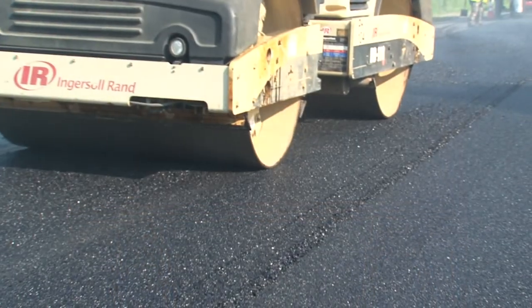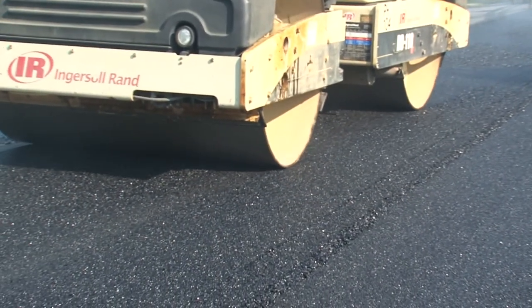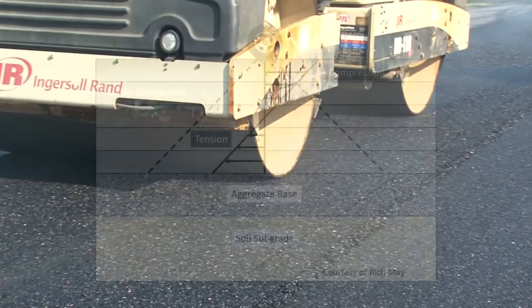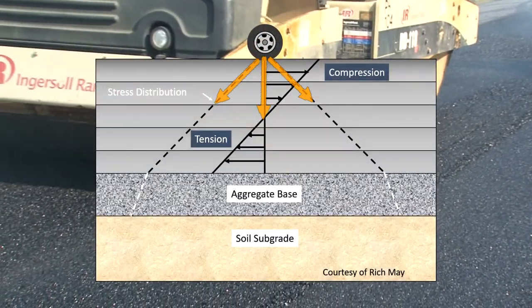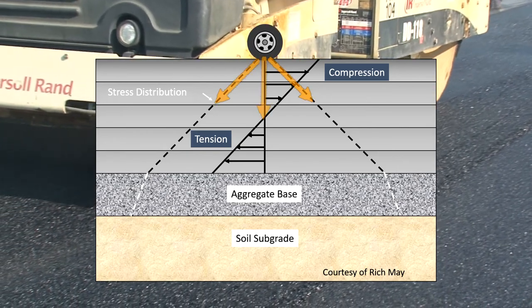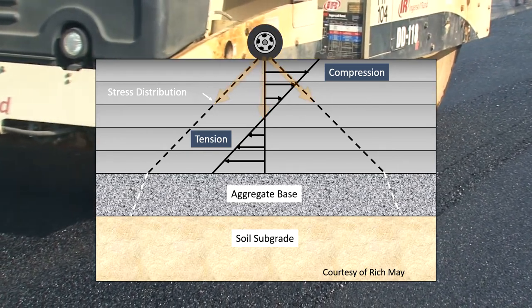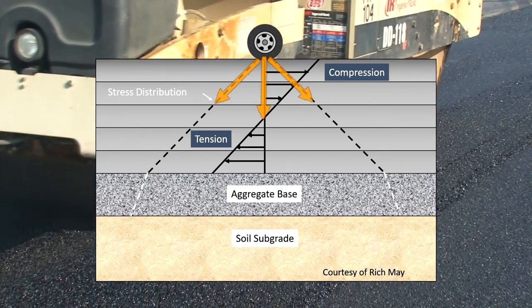In a well-bonded pavement with all layers acting as a monolithic layer, stress applied by a load will be distributed throughout the entire pavement.